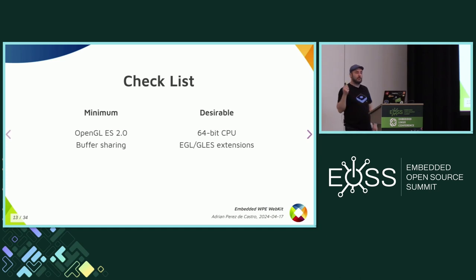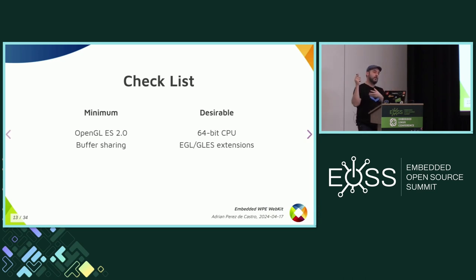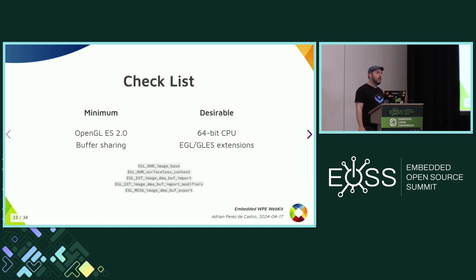The bare minimum we require is GLES 2.0 support. We'd like to increase the requirement to 3.0, but there are platforms we want to support that are still on 2.0. There also needs to be some mechanism for sharing graphics buffers between different processes — this is where the multi-process architecture comes in. The web content process renders, then we have to pass that to the user application in a different process. If you're in a position to choose your hardware, please pick a 64-bit system-on-chip or CPU. There are also a number of EGL and GLES extensions that aren't strictly required but make things more performant, especially for passing buffers among processes.